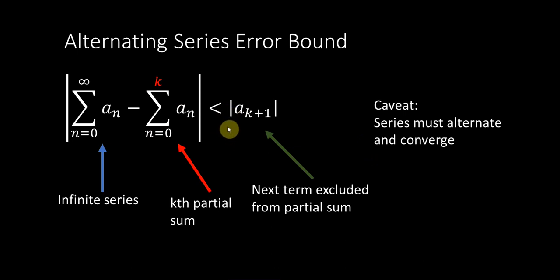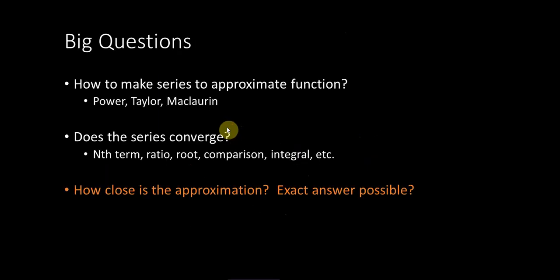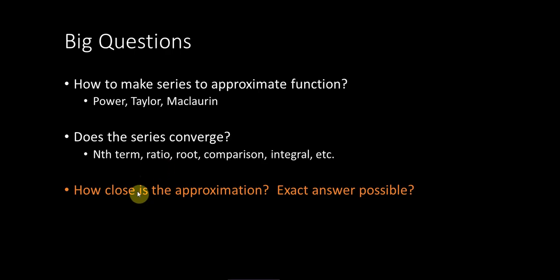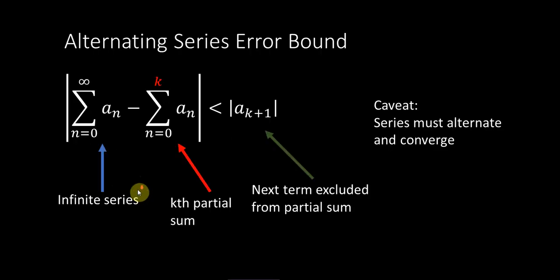For now, we're going to proceed, and I'm going to show you how we can use the alternating series error bound to answer this third big question here. How close is the approximation? Well, let's look at an example. Use the first four terms of the Maclaurin series for cosine to estimate cosine of 0.5. How close is the estimate to the exact answer?